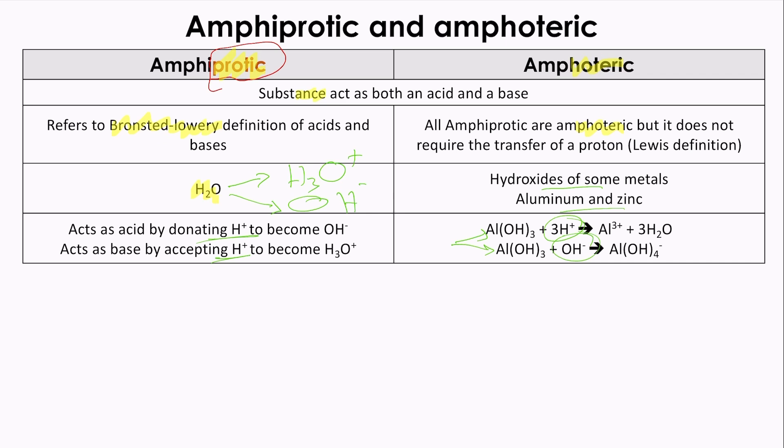Let's check a question about this particular problem. Explain why the dihydrogen phosphate anion H2PO4 negative can show amphiprotic behavior.